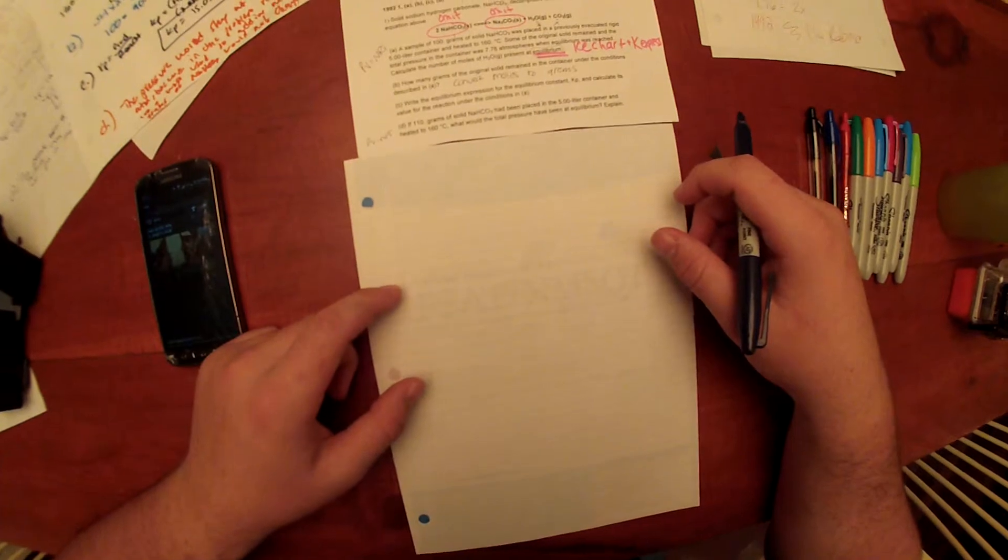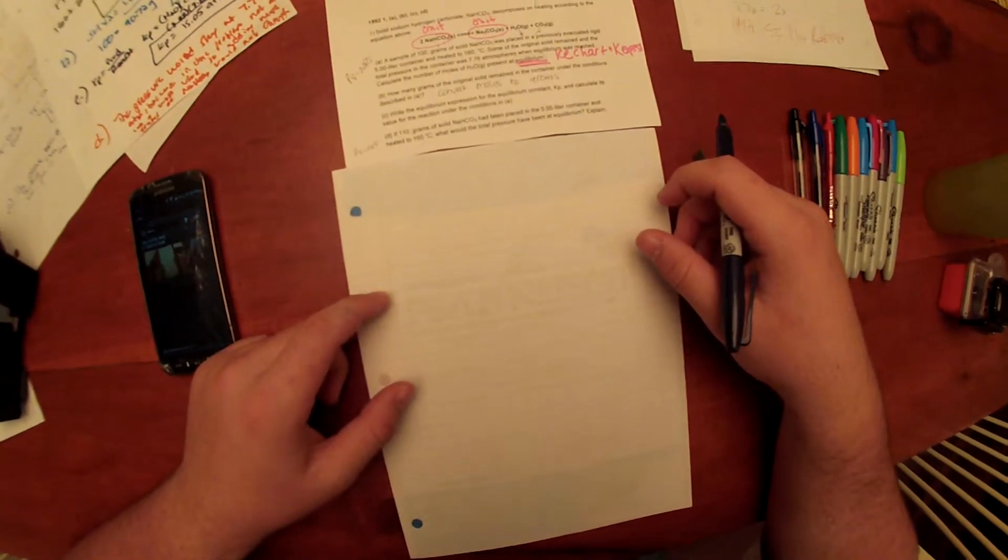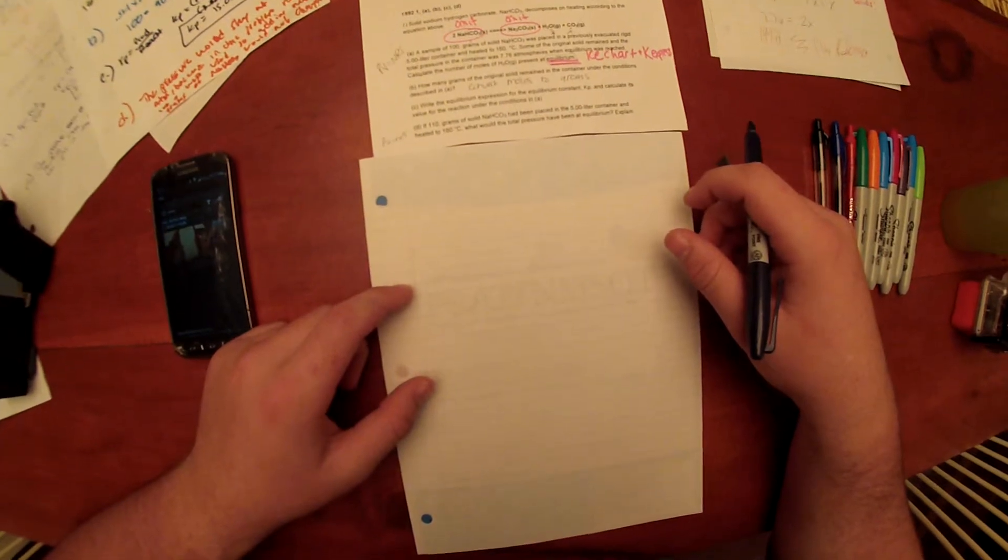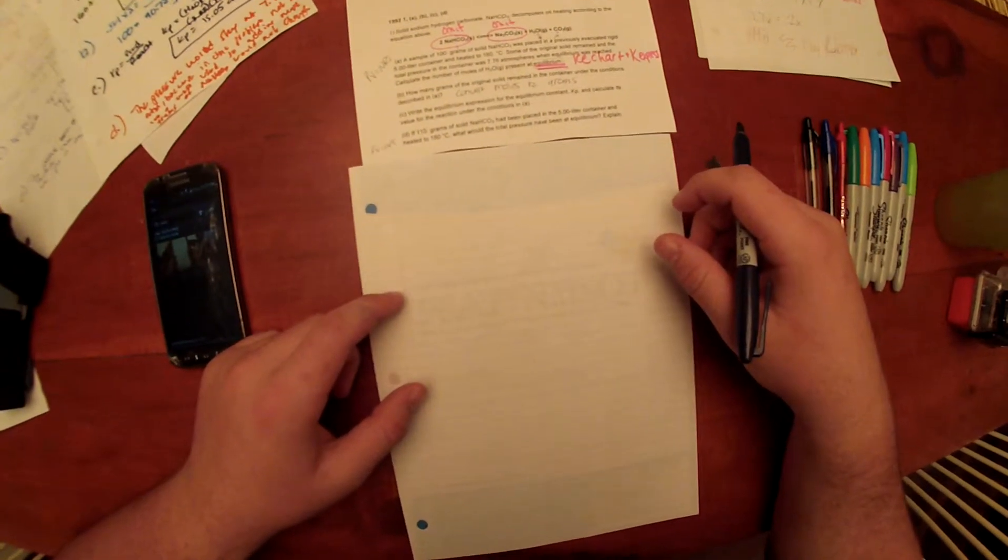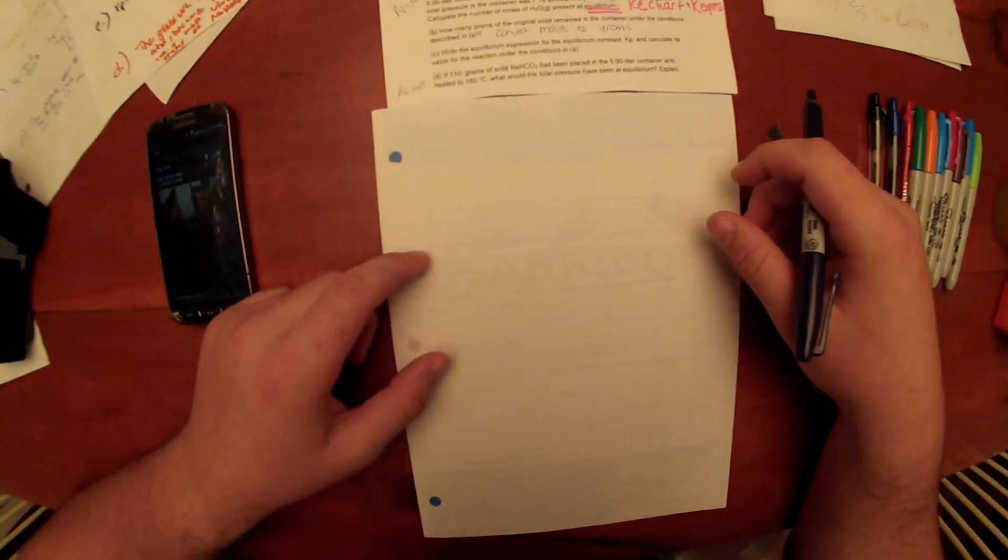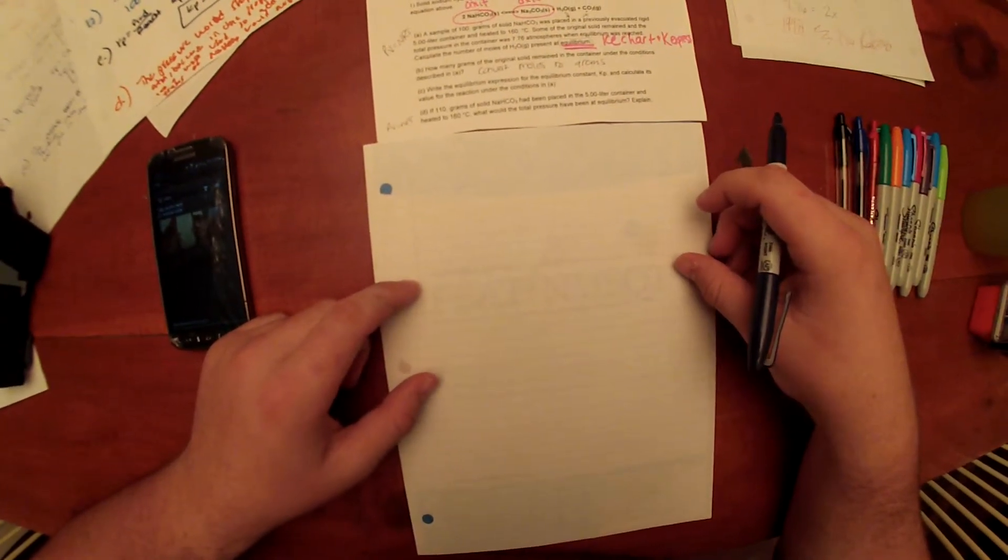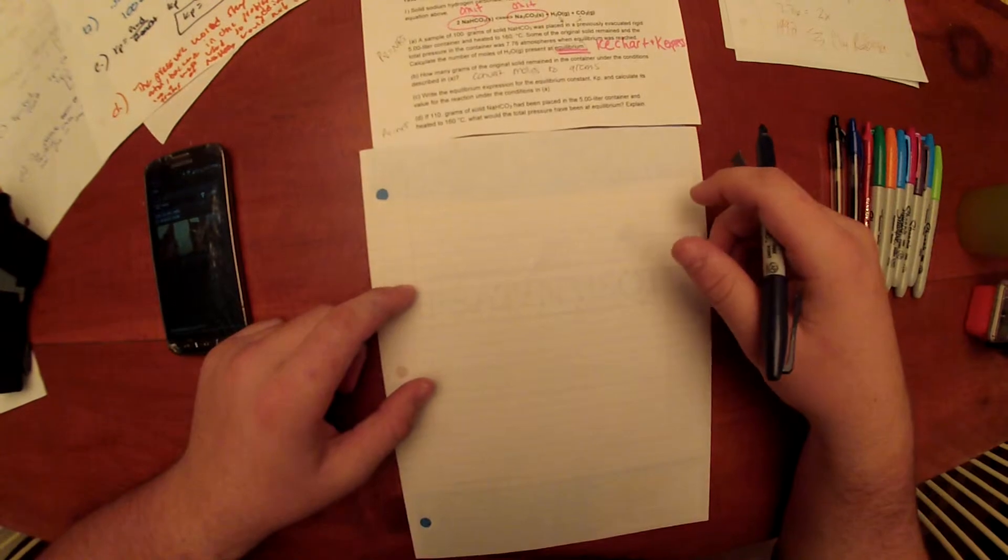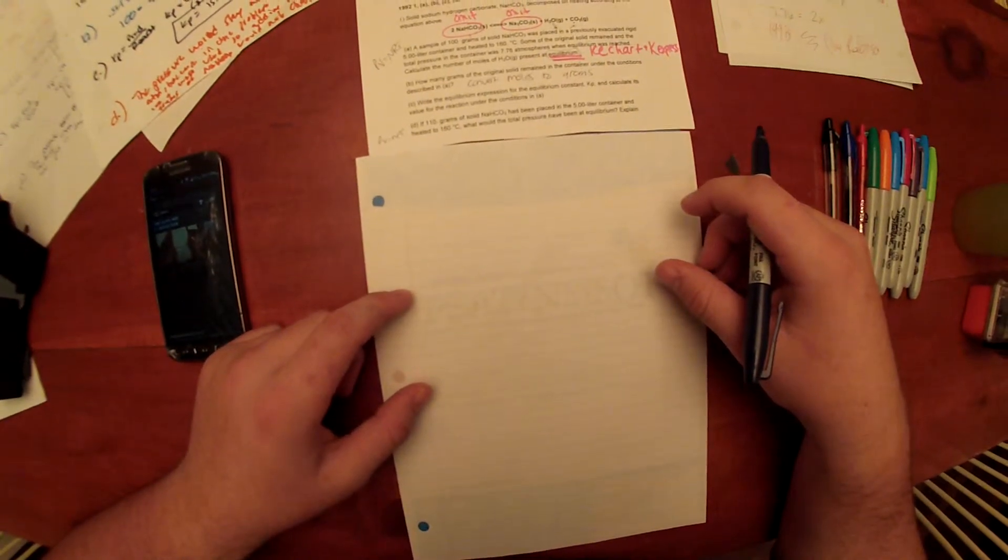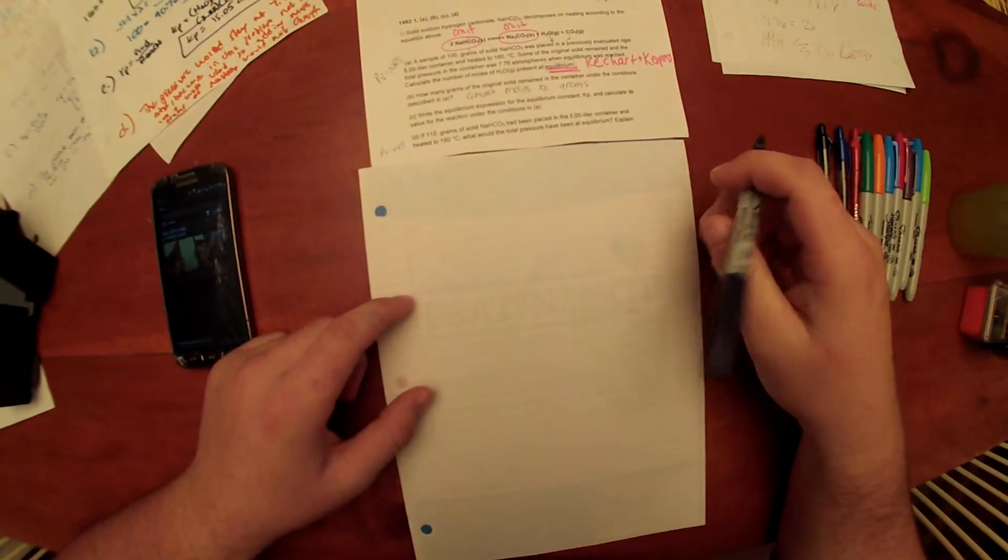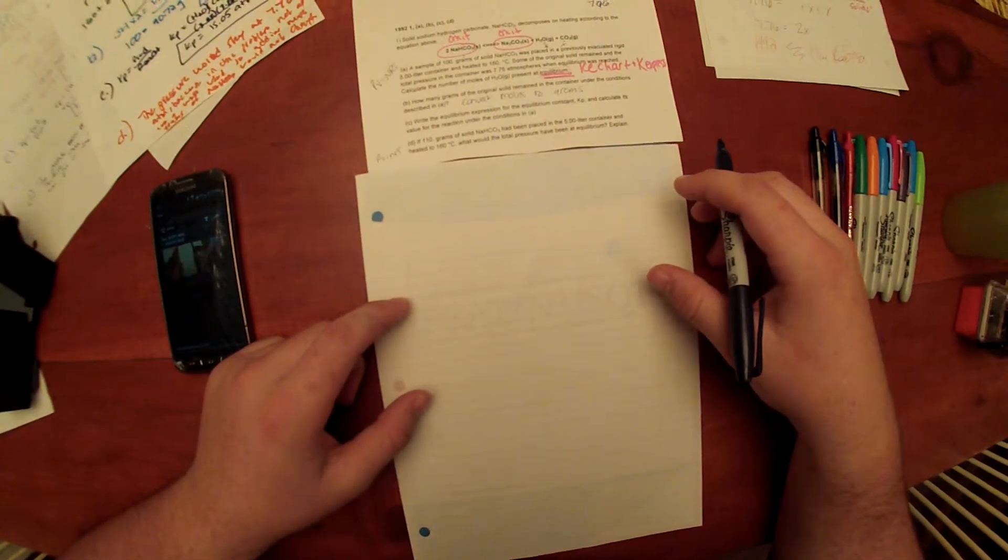Solid sodium hydrogen carbonate, NaHCO3, decomposes on heating according to the equation above. Two NaHCO3 solid gives you Na2CO3 solid plus H2O gas plus CO2 gas. Question A asks, a sample of 100 grams of solid NaHCO3 was placed in a previously evacuated rigid 5 liter container and heated to 160 degrees Celsius.